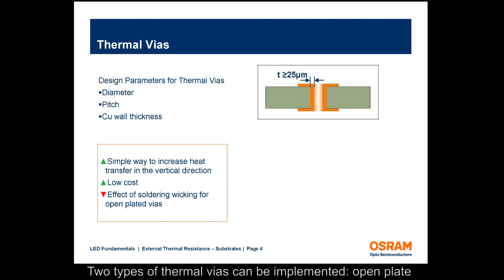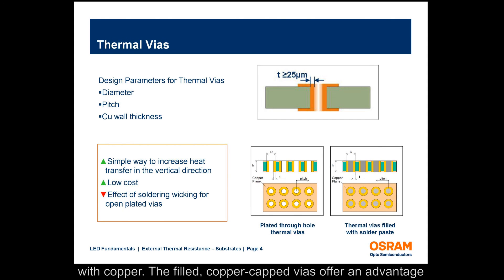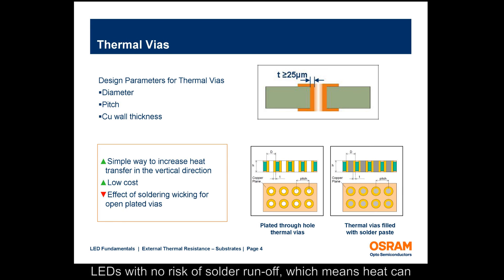Two types of thermal vias can be implemented: open plate through-hole vias, or vias filled with epoxy and then capped with copper. The filled, copper-capped vias offer an advantage as they can be arranged directly under the heat sink of the LEDs with no risk of solder runoff, which means heat can directly pass from the package onto the heat sink.